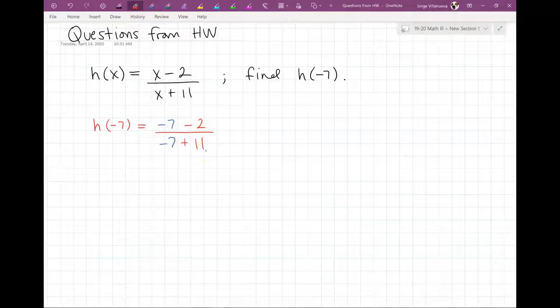Now that you work it, -7 minus 2 is -9. Negative 7 plus 11, that's a positive 2. Nope, that's not a positive 2, I'm sorry. That's a positive 4.